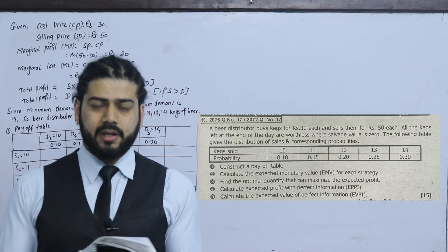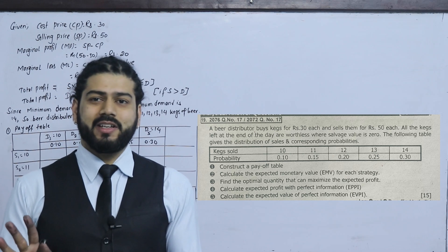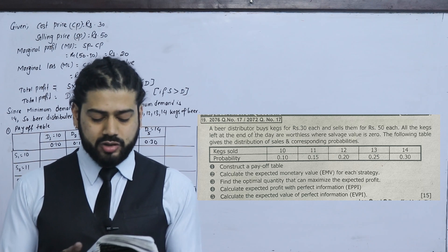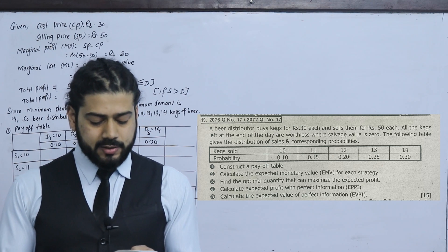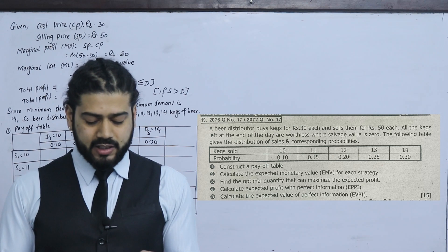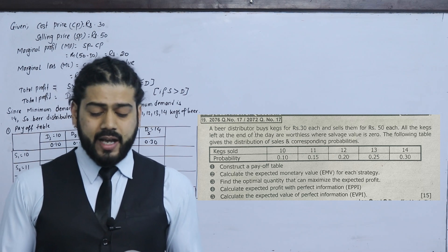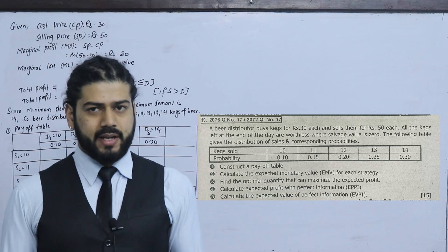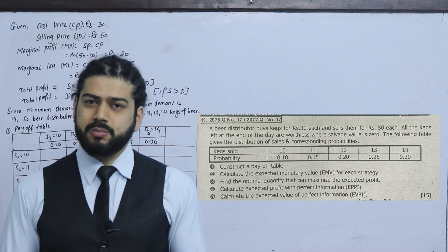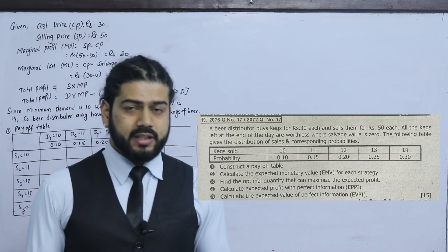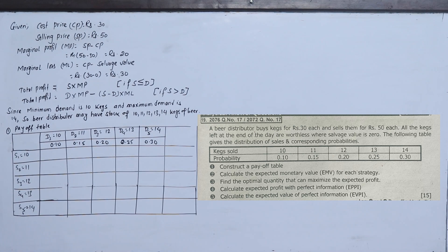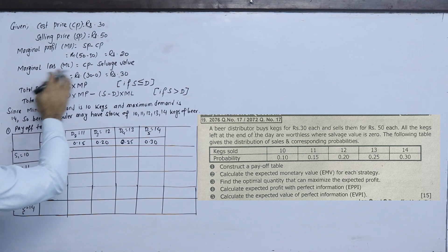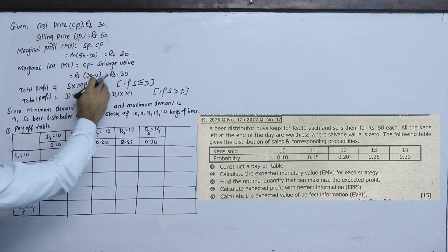First, construct a pay-off table. As covered in the previous class, we need to build a pay-off table. The buying price is Rs.30 and selling price is Rs.50. Marginal profit is 50 minus 30 equals 20. Marginal loss is 30.